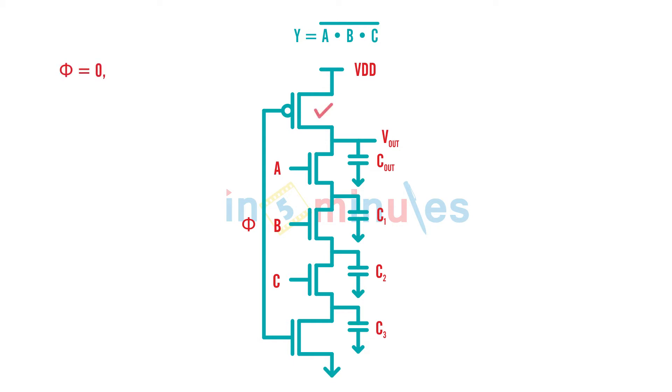Now what's going to happen is when phi is equal to 0, my PMOS transistor is on and my V_out is charged to VDD. At that point of time any change in A, B, or C or any of the inputs will not be evaluated because we are in the precharge phase.